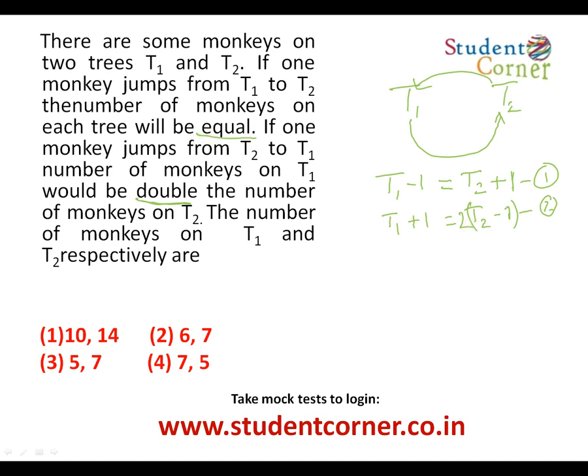Using the first equation logic, the difference between the two trees must be exactly two, and T1 should be greater. From the options, the answer is (7, 5). Verification: 7-1=6 and 5+1=6, they are equal. And 7+1=8, 5-1=4, and 4×2=8, so T1 is double T2.